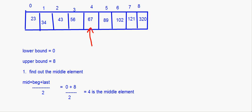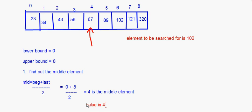Now the element to be searched for — let's say we have to search for 102. First we find out the middle element: index 4 is the middle. The value at index 4 is 67. Now this is an array sorted in ascending order, so we know that 102 cannot be on the left hand side. Since 102 is greater than 67, it has to be on the right hand side.